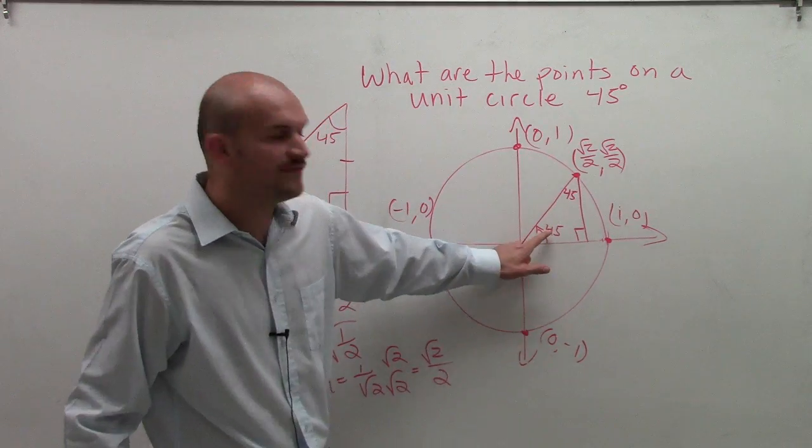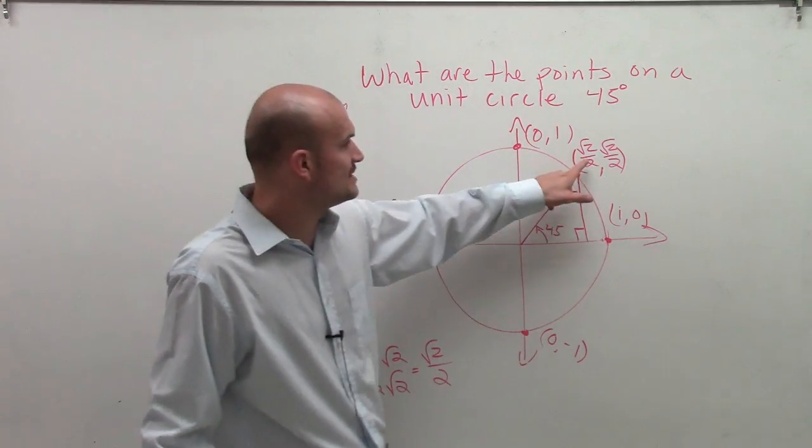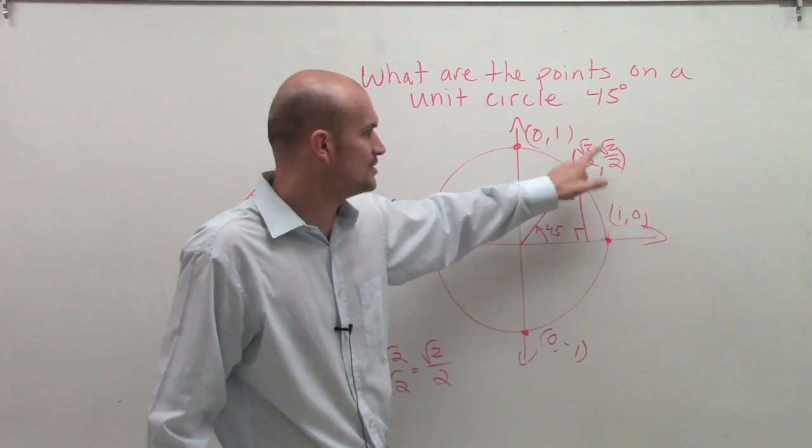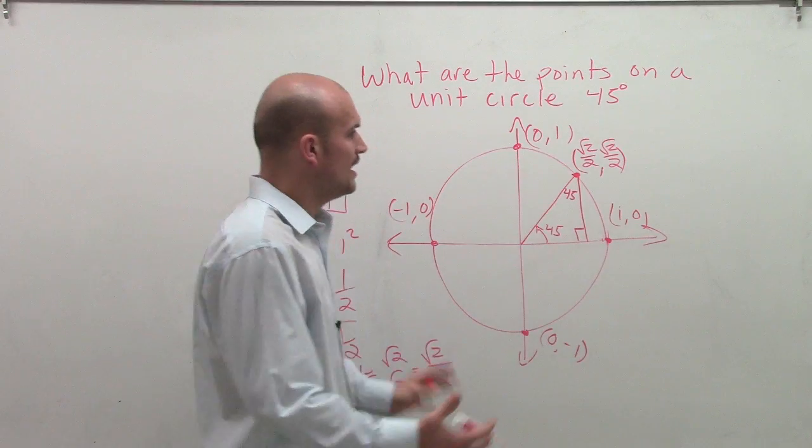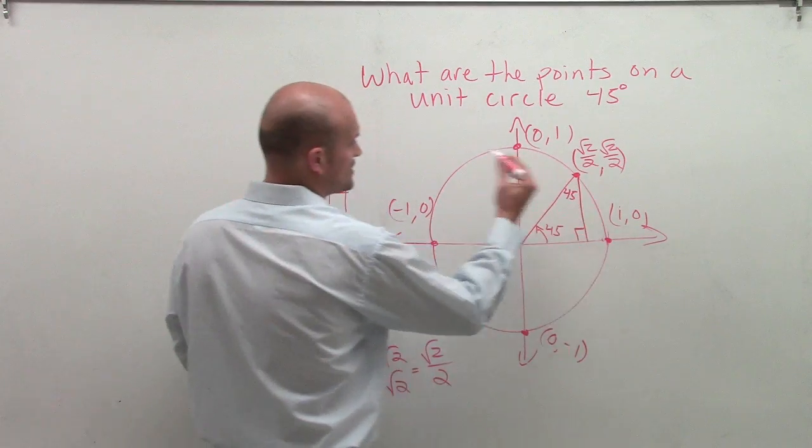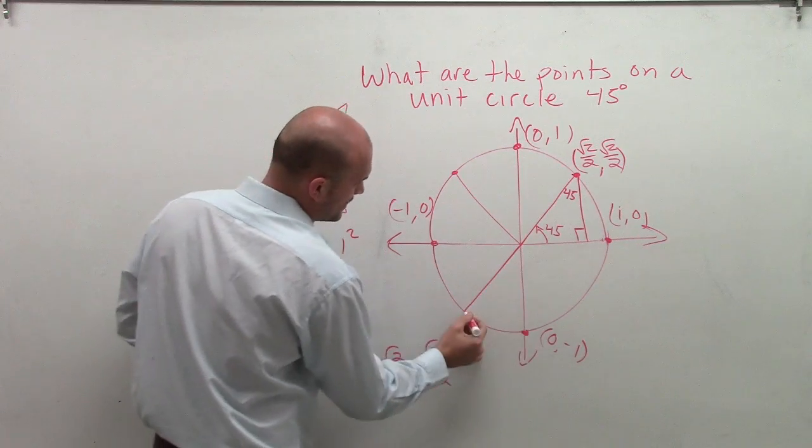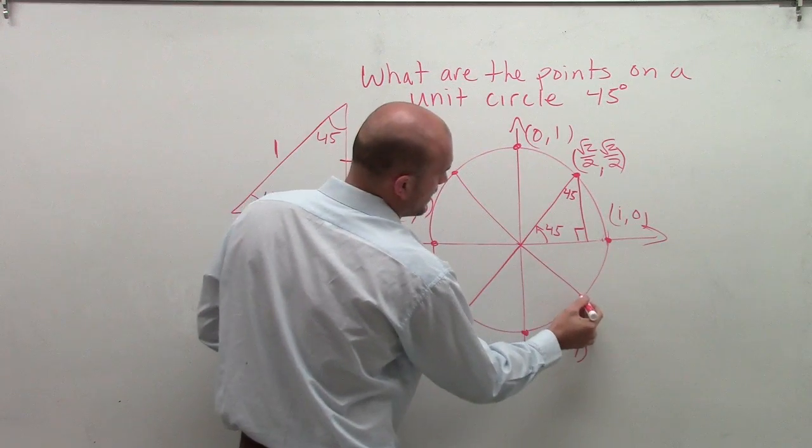Therefore, at my 45-degree angle, the point is square root of 2 over 2, square root of 2 over 2. What you'll notice is if I look at reflections of these angles, this point will appear all over my unit circle.